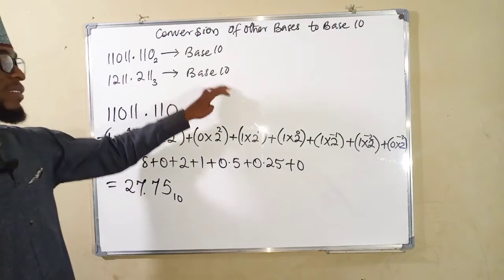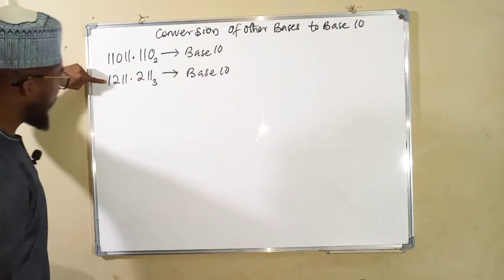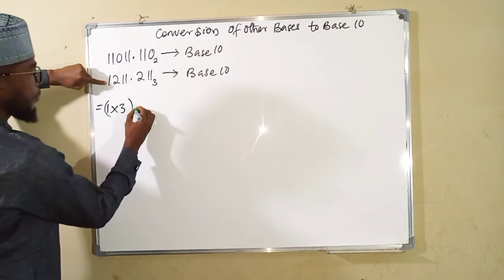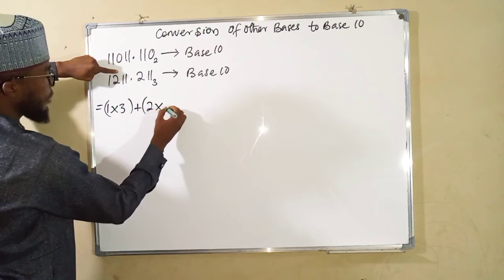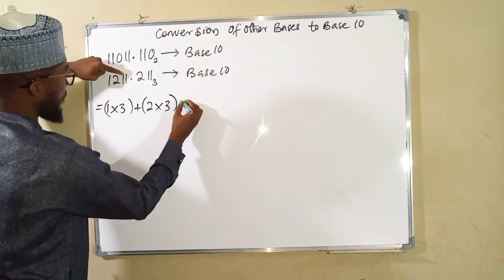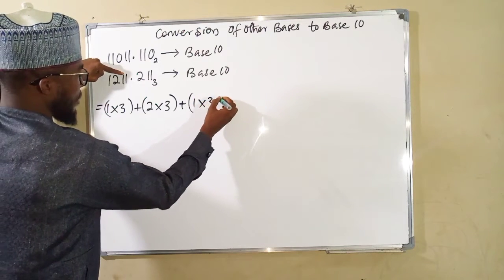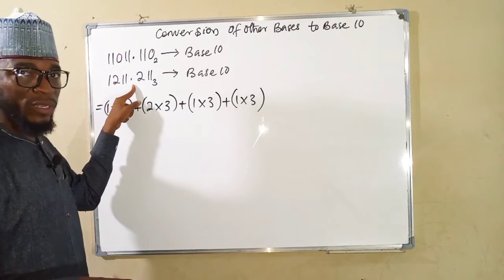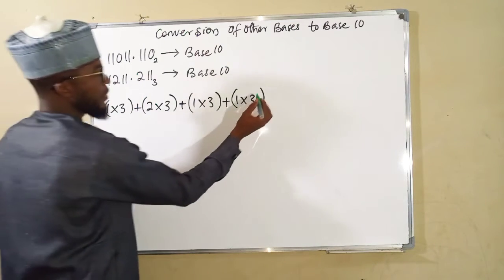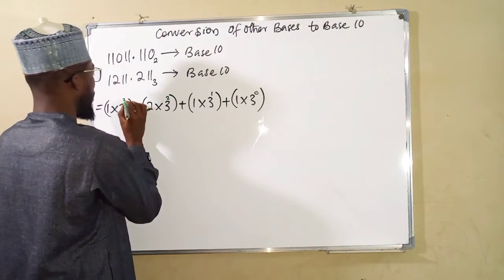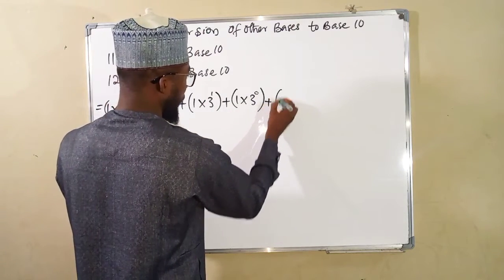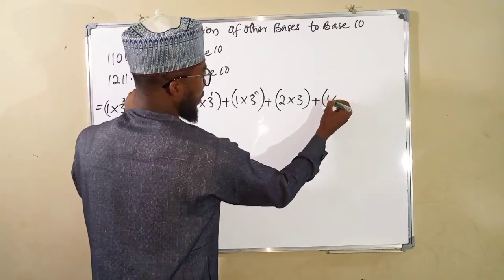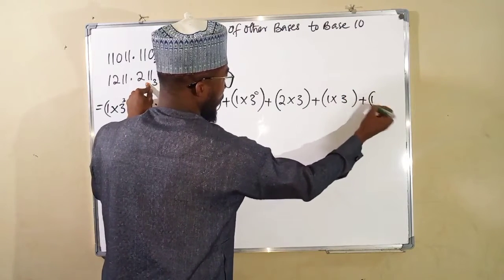So now let us see how to convert this next number to base 10. We take the first digit which is 1, we multiply it by the base 3. We add the second one, 2, multiplied by the base 3. We add the third one: 1 times 3. We add the last one. We stop before the decimal point because we are going to have different indices: 0, 1, 2, and 3. Then we move on: plus 2 times the base 3, plus 1 times the base, plus 1 times the base.